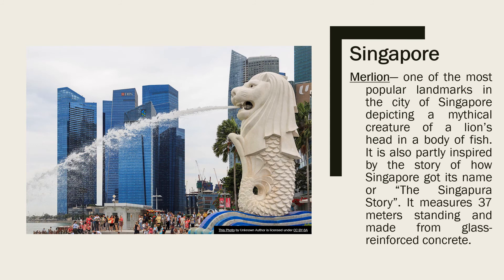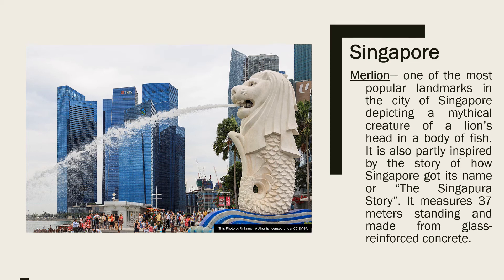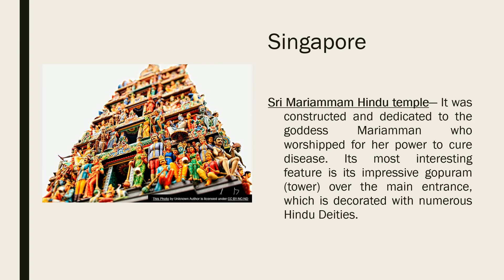In Singapore, the Merlion is one of the most popular landmarks, depicting a mythical creature with a lion's head and a body of a fish. It is also partly inspired by the story of how Singapore got its name. It stands 37 meters tall and is made from glass-reinforced concrete. The Sri Mariamman Hindu Temple was constructed and dedicated to the goddess Mariamman, who is worshiped for her power to cure disease. Its most interesting feature is its impressive Gopura, or tower, over the main entrance, which is decorated with numerous Hindu deities.